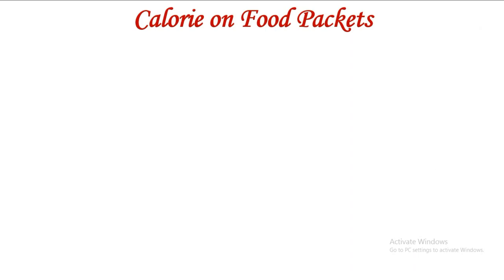A key point to highlight is the nutritional information you see on a food package — it is actually mentioned in kilocalories, or kcal, which equals 1000 calories. Sometimes the energy content of food is also expressed in kilojoules, or kJ, a metric unit. One kilocalorie equals 4.184 kilojoules.